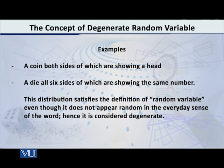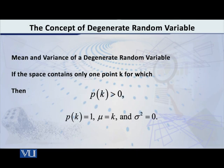So degenerate — woh jo normal curve ya koi aur distribution hai, woh toh pheli hoti hai. Yeh toh aapki jo support hai woh collapse hoke it is only one single point. In this particular example, it is three. Isko agar hum formally kahein using algebra: if the space of the random variable contains only one point k, for which the probability p(k) is greater than zero, then p(k) has to be equal to one. The mean of that random variable is equal to k — yani mu is equal to k — and the variance of that random variable is equal to zero.